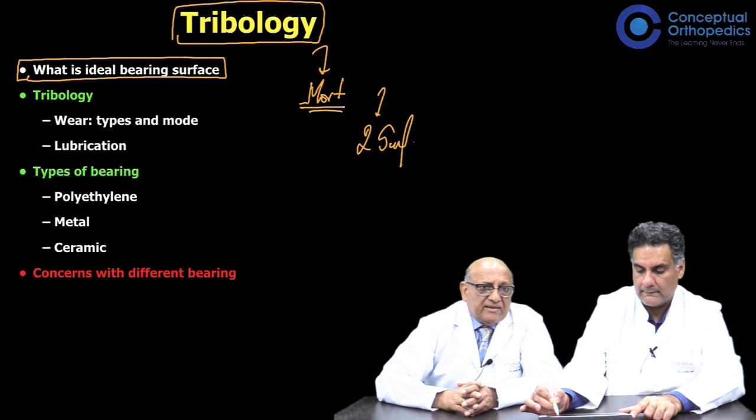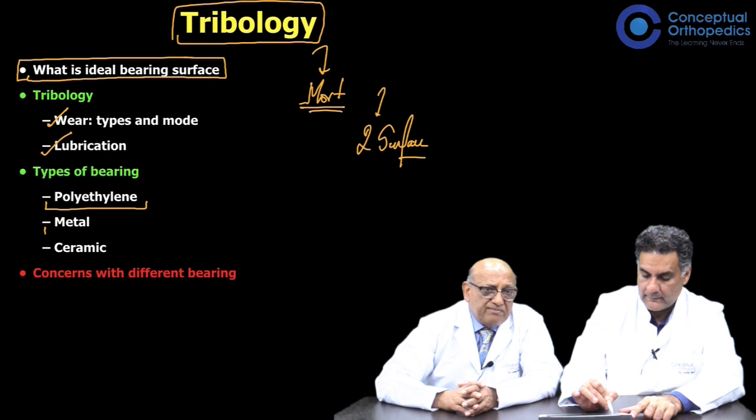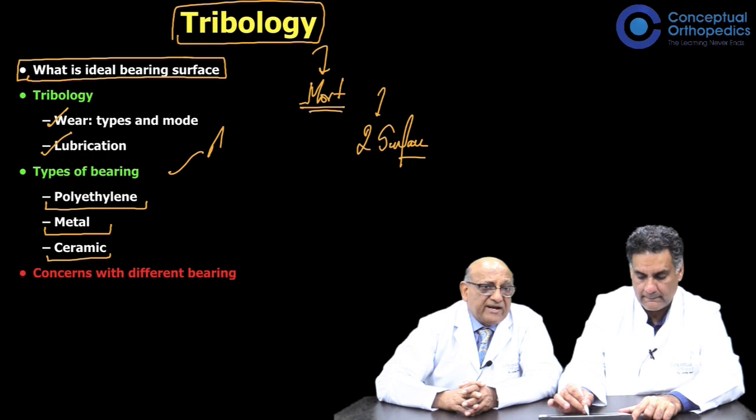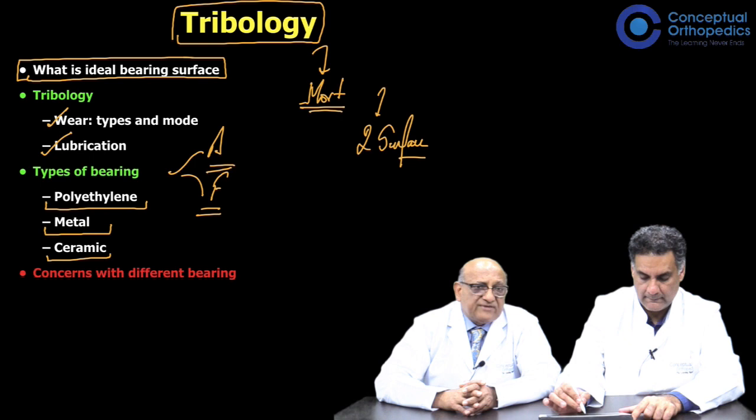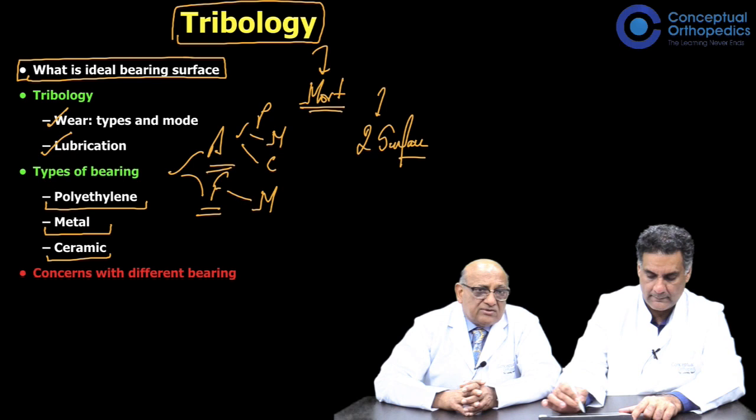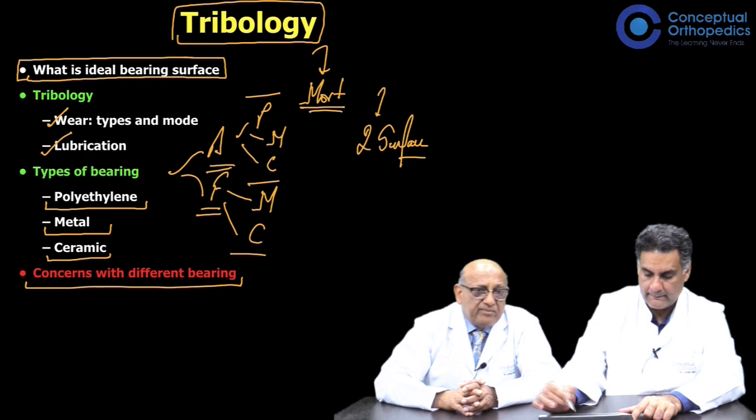We will discuss the types of bearings, which are the bearing surfaces of a total hip replacement: the bearing surface on the acetabular side and on the femoral component side, which is the head of the femur. On the acetabular side you could have polyethylene, metal, or ceramic, and on the femoral head side it could be metal or ceramic. Finally, we will look at the concerns with the different bearings used today in practice.